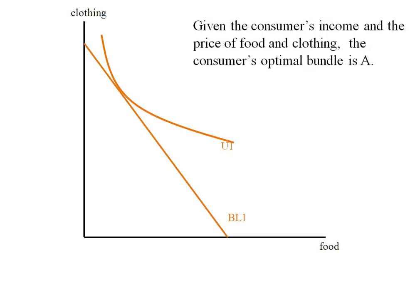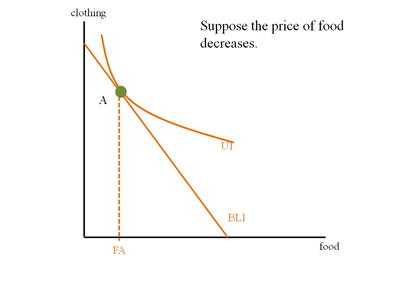Let's find the substitution and income effect graphically. We'll start with the consumer's income and the price of food and clothing, and that'll give us an optimal bundle. The optimal bundle will be at the tangency between BL1 and U1. That's bundle A, and it has FA units of food in it.